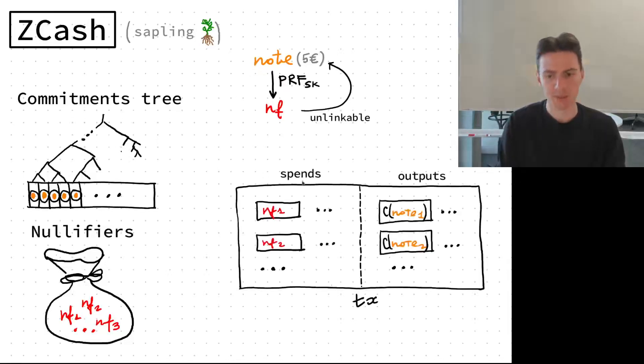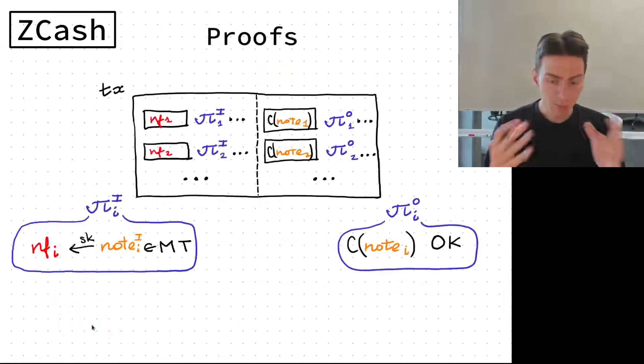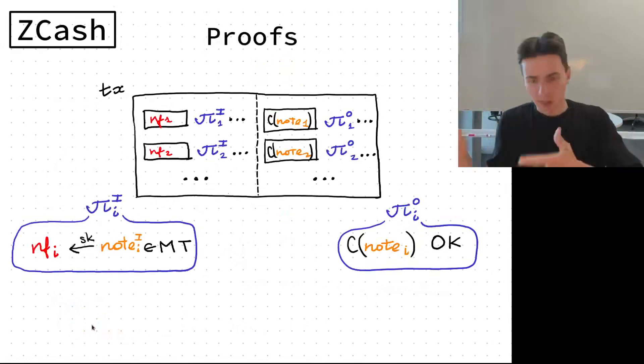Zcash maintains two structures: commitment tree, a tree of commitments of notes, and then a set of nullifiers. Whenever a transaction comes that wants to spend some coins and output some coins, it has a set of input nullifiers and a set of output commitment notes. In the endpoint transaction is verified, nullifiers go to this set of nullifiers and the commitments go to the commitment tree. Nullifiers prevent double spending. Zcash uses NIZKs, we have a NIZK per input and NIZK per output.